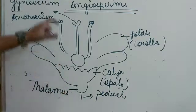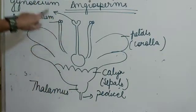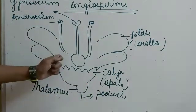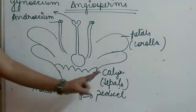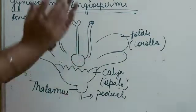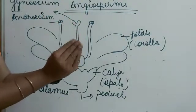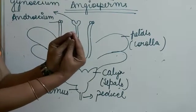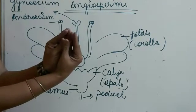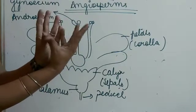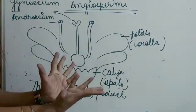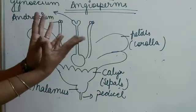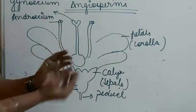If we look at the anatomy of a typical flower, it has female parts, male parts, the corolla that is the petals, and the calyx that is the sepals. Beginning with the calyx — the calyx protects the flower in the bud condition. When the flower is in bud form, the calyx is green in color. The green color means it performs photosynthesis. As the flower blooms, the calyx opens out of the bud condition.